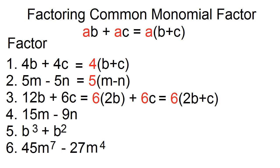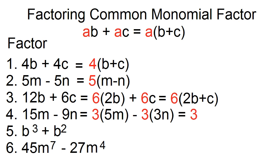Number 4. Factor 15M minus 9N. 15M can be written as 3 times 5M, and 9N can be written as 3 times 3N. The common monomial factor is 3. 3 times 5M divided by 3 is 5M, minus 3 times 3N divided by 3 is 3N. The factors are 3 and the quantity 5M minus 3N.